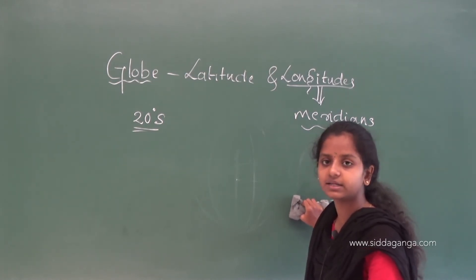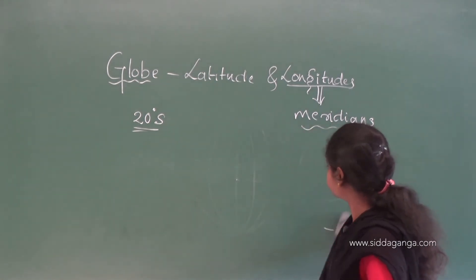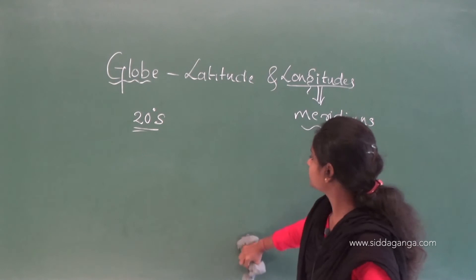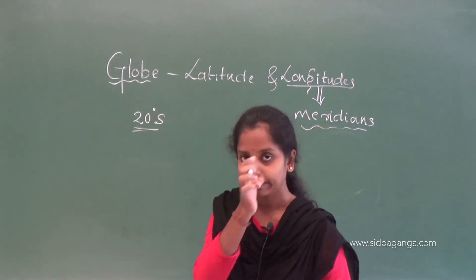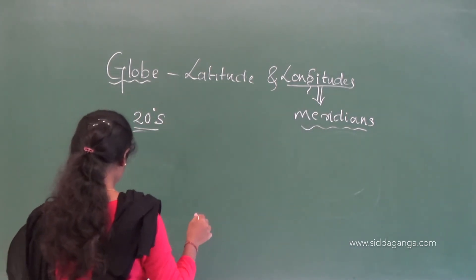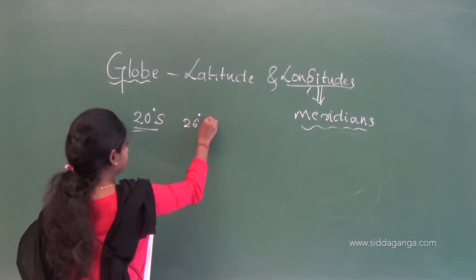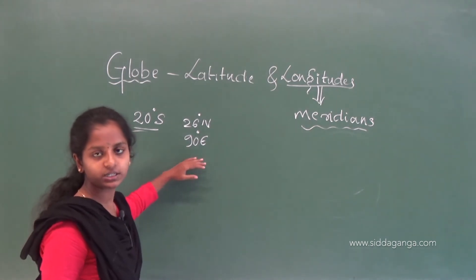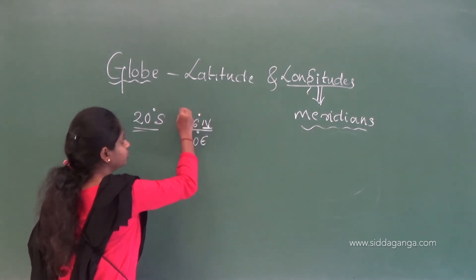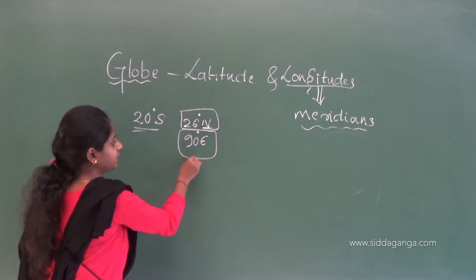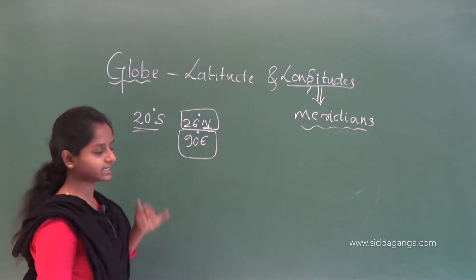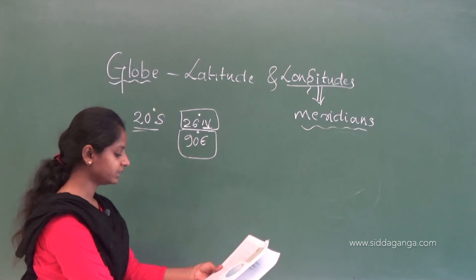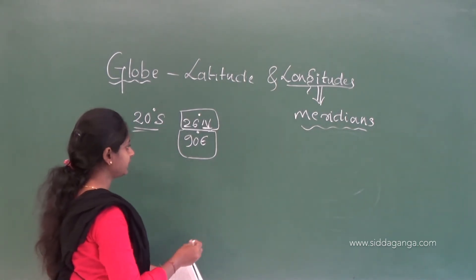Latitudes are represented as degree north or degree south. If we want to locate any place on the Earth's surface, it is very easy. For example, Dubri is at 26 degrees north and 90 degrees east longitude. North tells us it is a latitude, and east tells us it is a longitude.